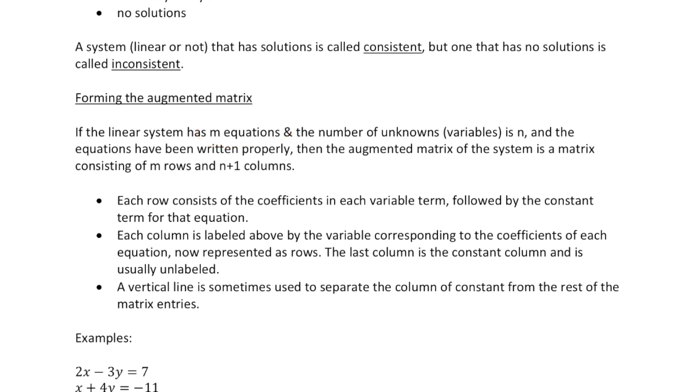If the linear system has M equations and N unknowns, and equations have been written properly as I've stated, then the augmented matrix of the system with respect to that particular order of variables is a matrix consisting of M rows and N plus 1 columns.